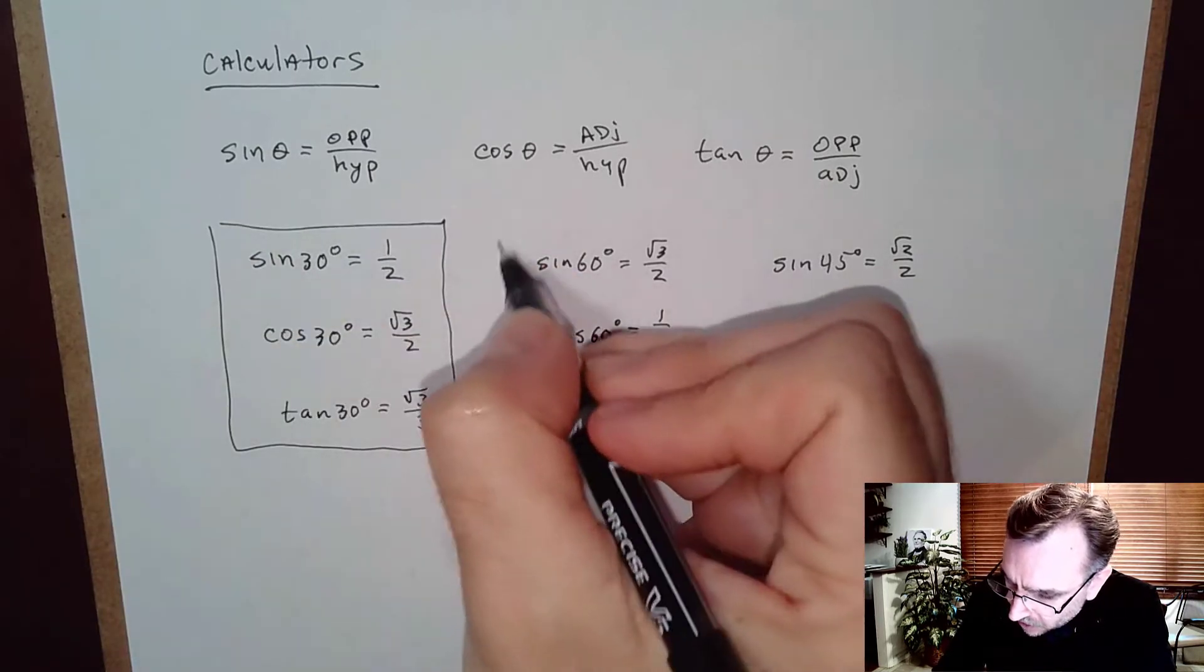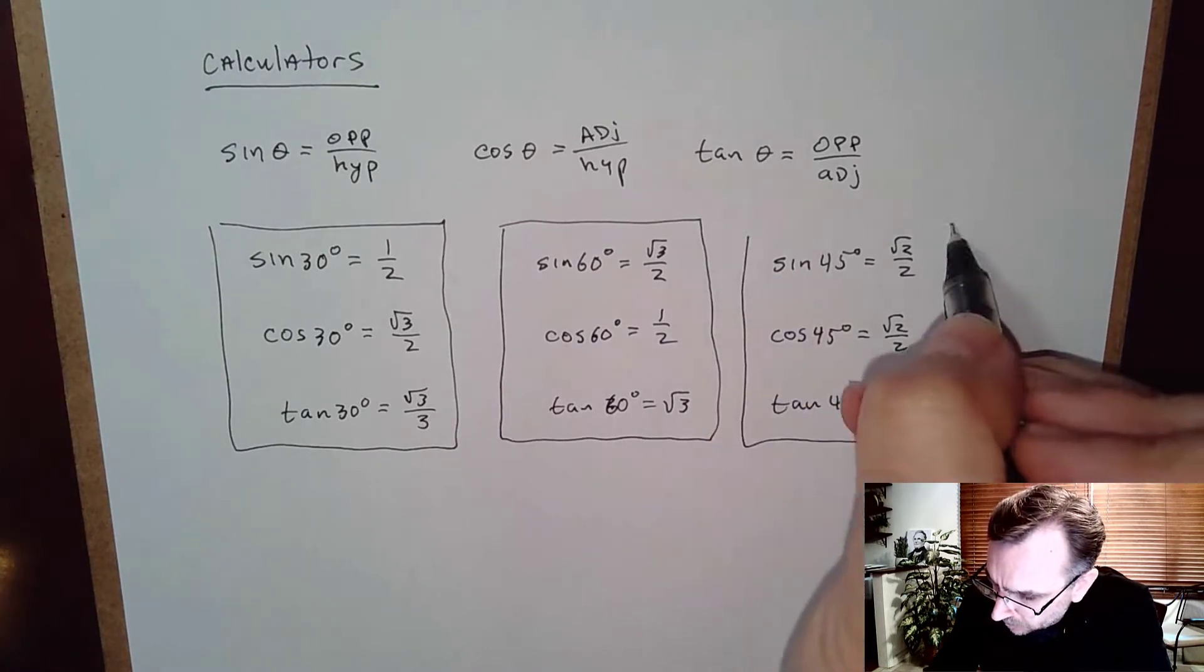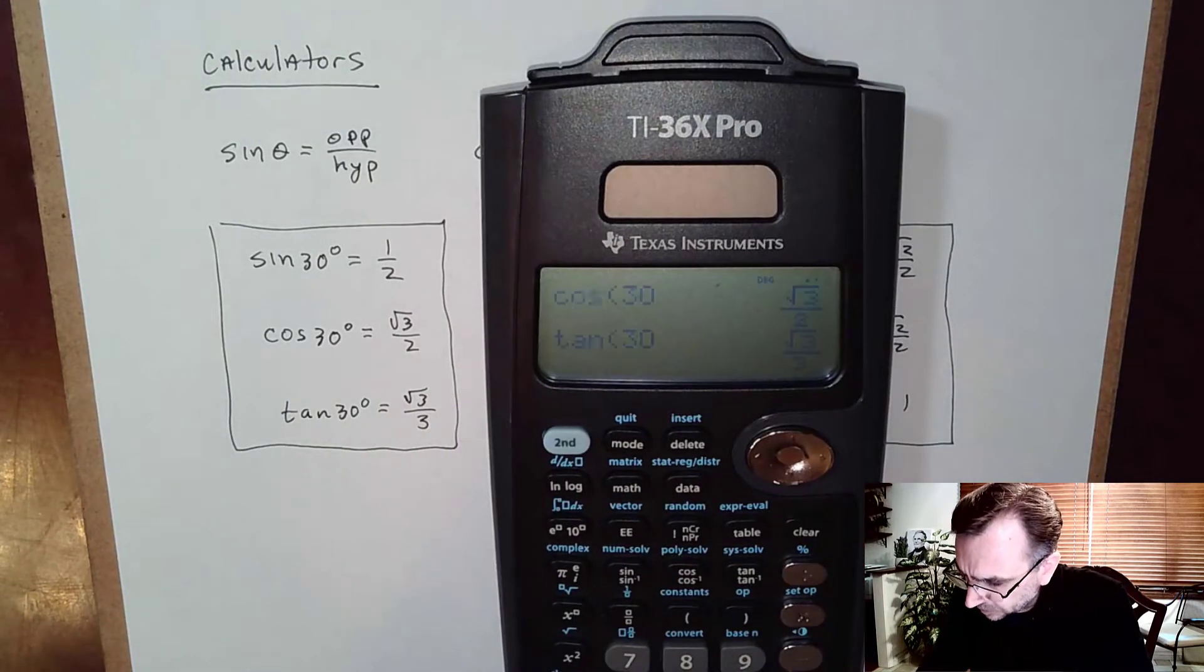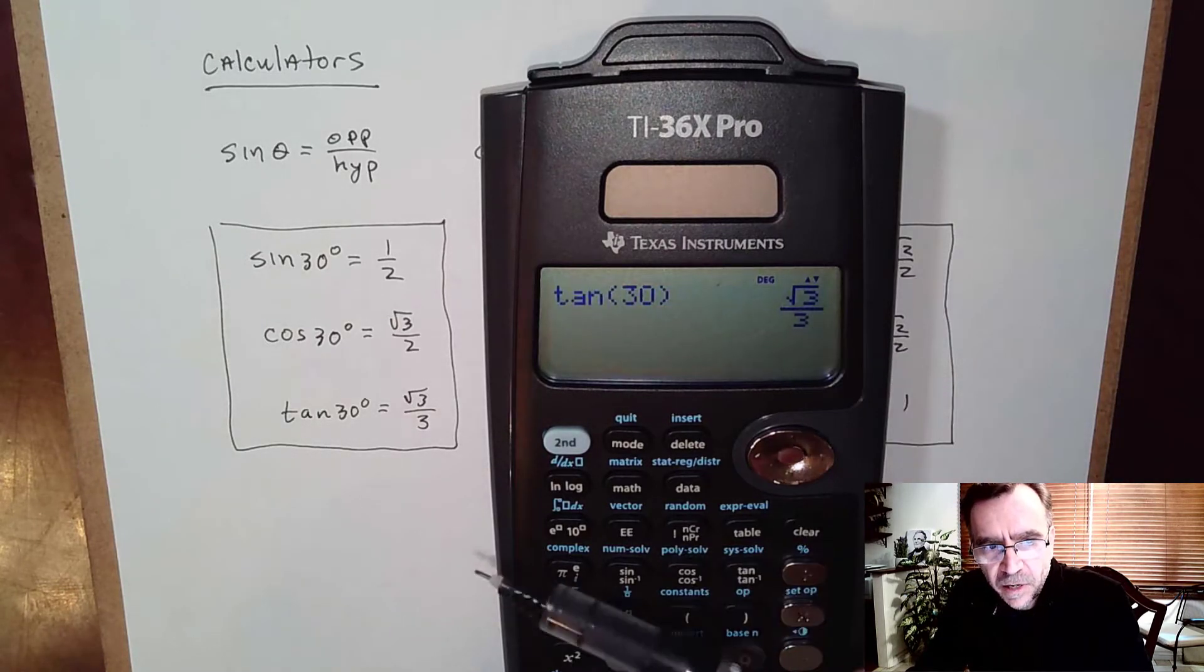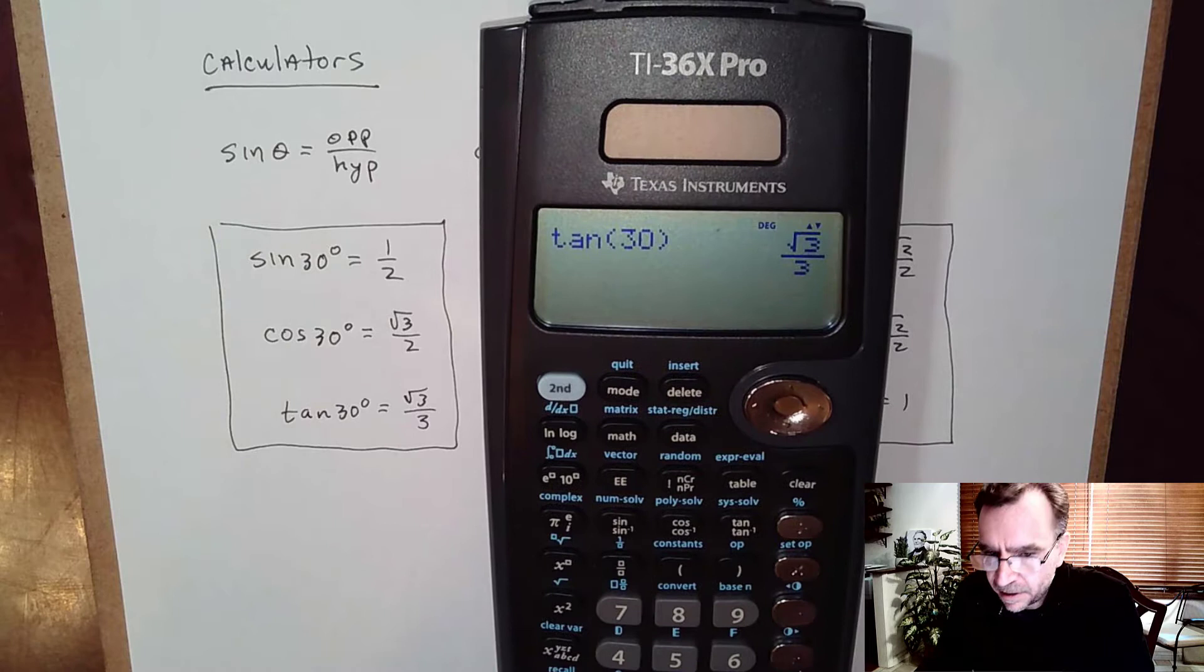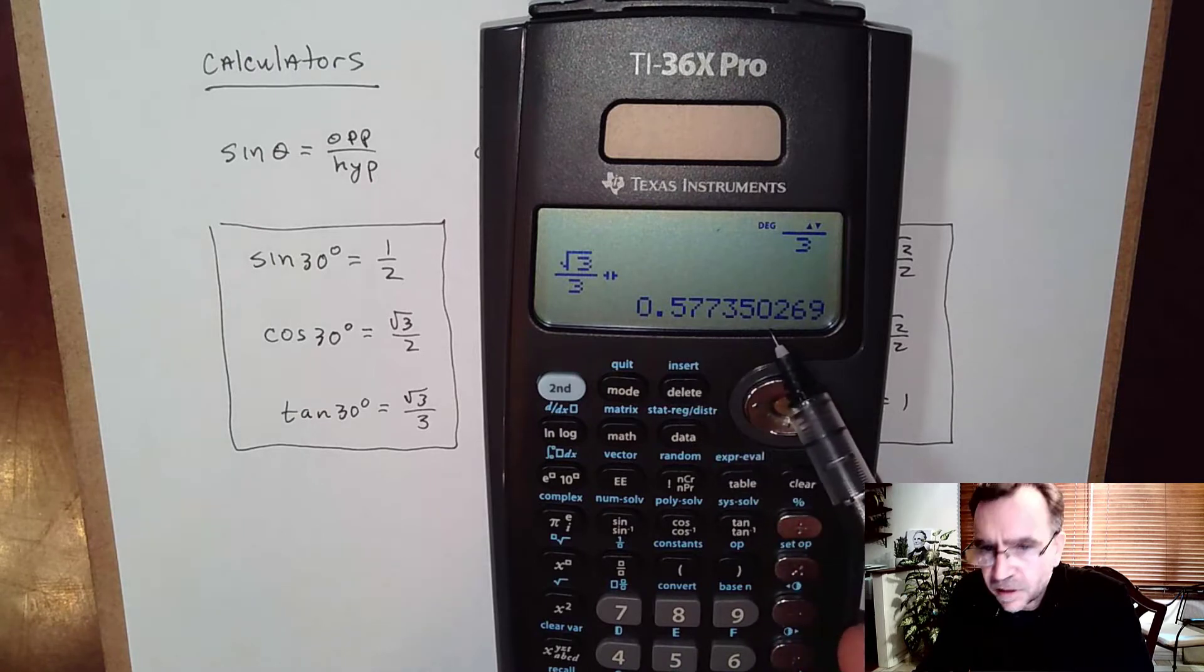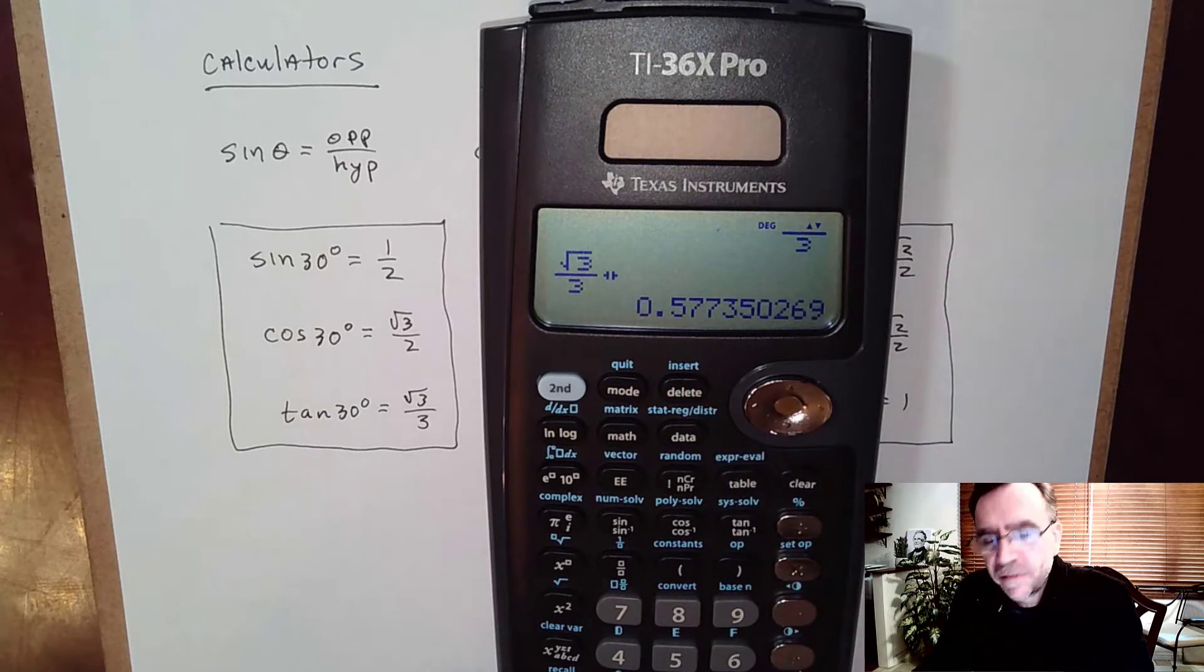Now even though we're going to be using a calculator, I do want you to memorize these. But you can see your calculator can do them anyway. If you forget tangent of 30°, you type that in. On my calculator I get √3/3, the nice exact answer. If I want the decimal equivalent, I hit the approximate button and I get 0.577350. That's an irrational number, so this decimal continues forever without ever repeating.